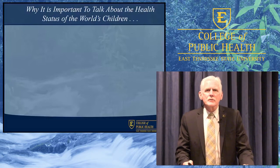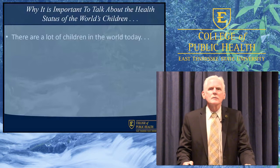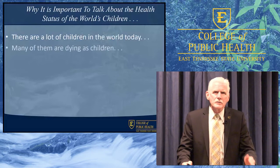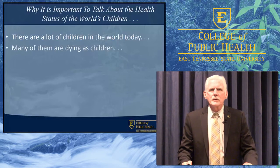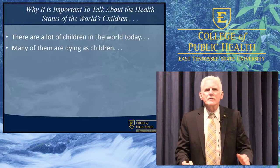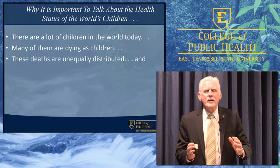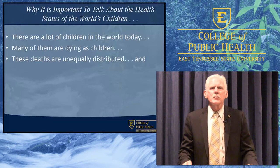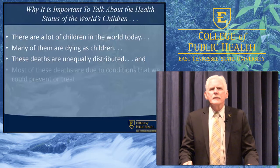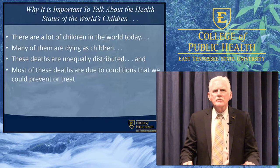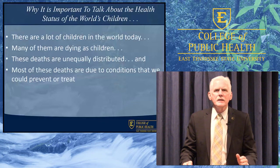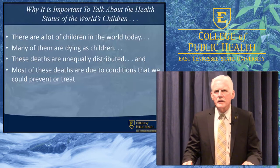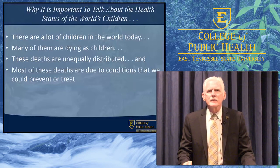I think there are five reasons why, in order to understand what we need to do to improve health around the world, you have to understand the health of the world's children. And those five reasons are: first, because there are a lot of children in the world. Secondly, many of them are dying as children — they're not growing up to be adults. The third issue is that the deaths of children are unequally distributed around the world, which makes it fundamentally a global health problem. And fourthly, most of the causes of death for these kids are things that could be easily prevented and cured. There's a fifth reason, but I'll get to that at the end of this talk.